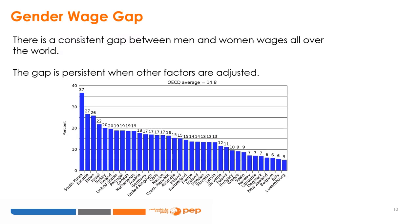Let me introduce my first example: the gender wage gap. There is a consistent gap between men's and women's wages all over the world. This gap is persistent when other factors are adjusted for – education, experience, parents' education, and so on. In OECD countries, the gender gap in median earnings is almost 15% for full-time employees. On average, men get a gender premium of 15%. One of the hypotheses proposed to explain this gap is that men are more competitively inclined than women.